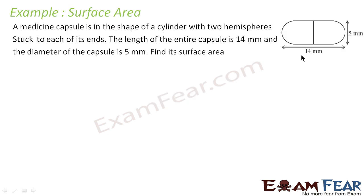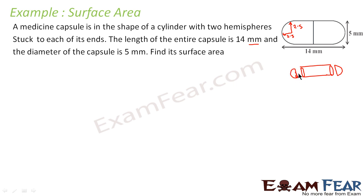One medical capsule is in the shape of a cylinder with two hemispheres stuck to each of its ends. The length of the entire capsule is 14 millimeters and the diameter of each capsule is 5 millimeters. If you break this shape, it is nothing but one cylinder, one hemisphere, and one hemisphere. The radius of each hemisphere is 2.5, and the cylinder also shares this radius of 2.5.